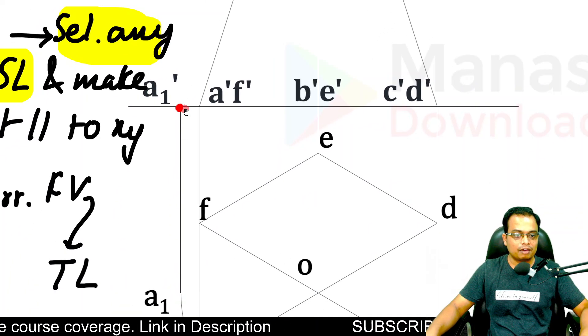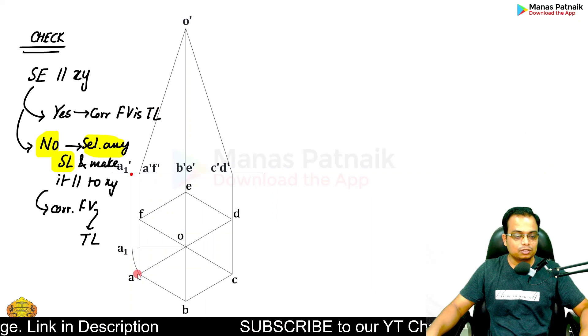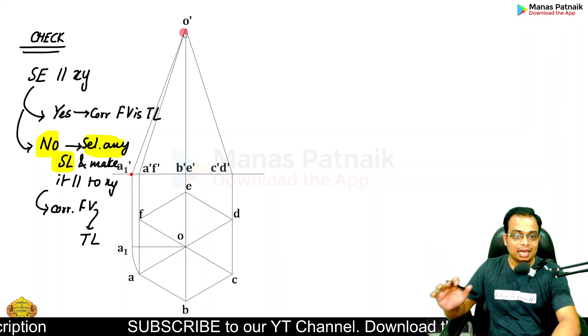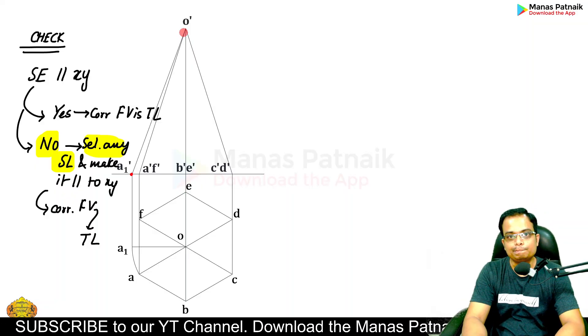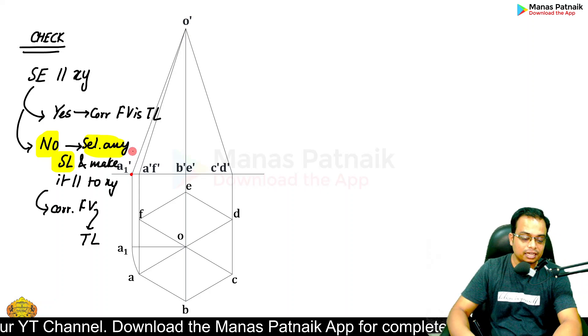A1 is going to have a new location in the front view, that is A1'. Just like A was connected to O, you have to connect A1' with O', and this now qualifies as your true length. I hope I have made myself absolutely clear - A' A1' and O' is now your true length.